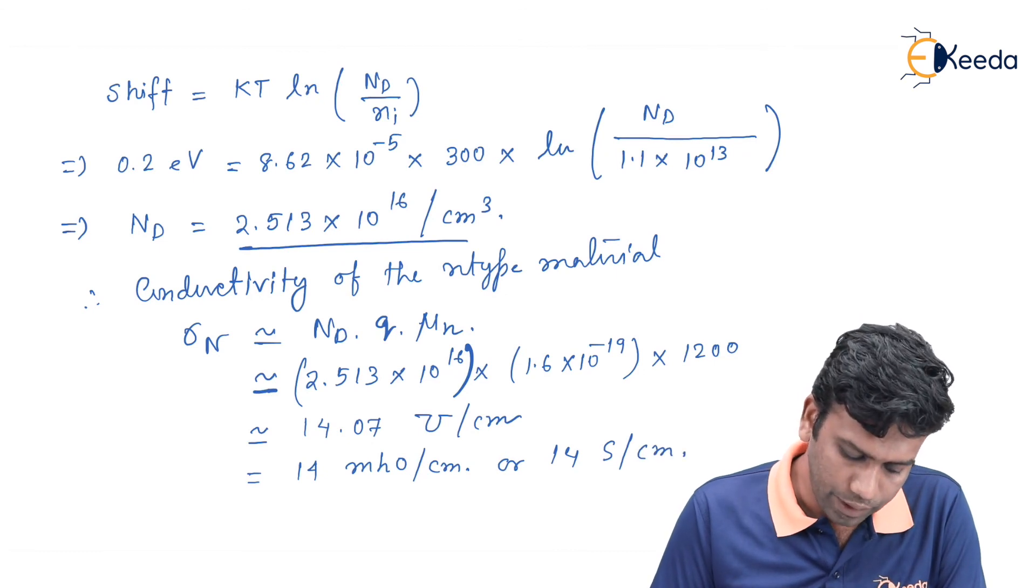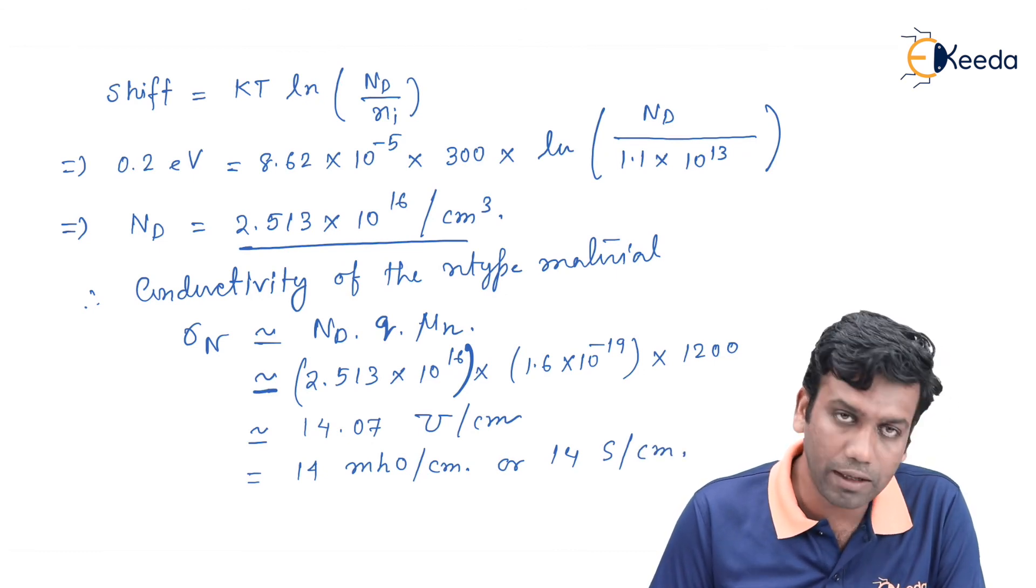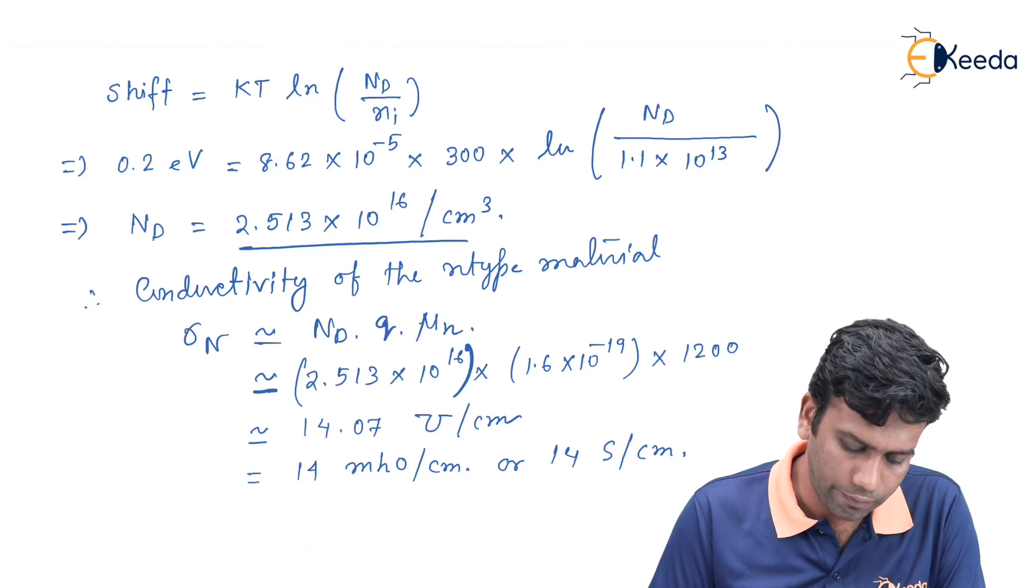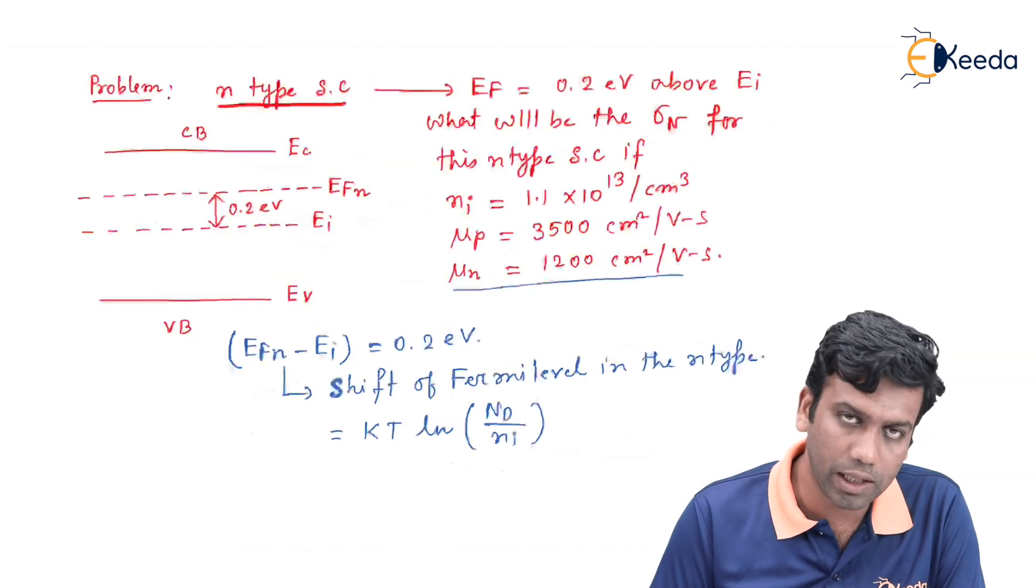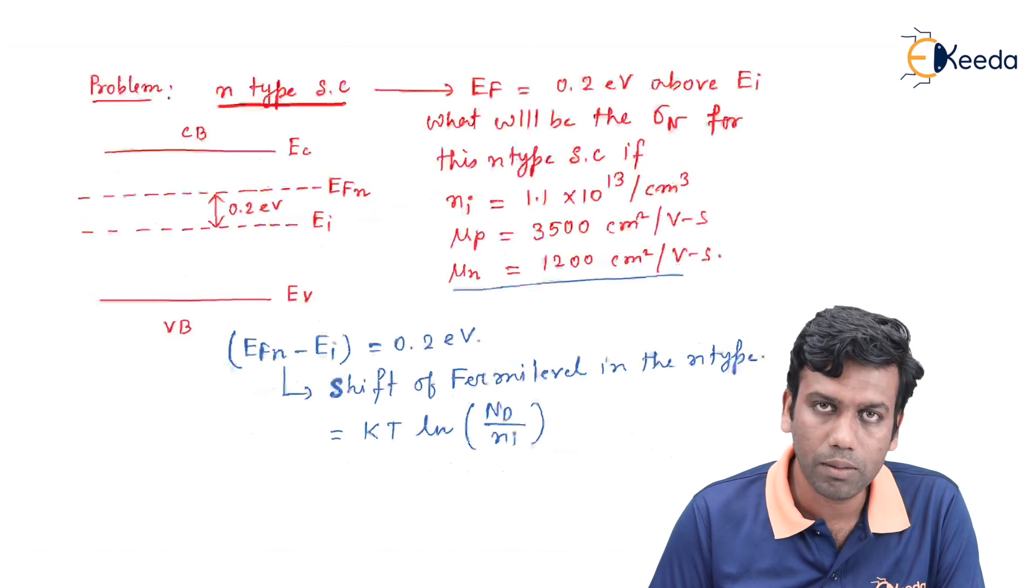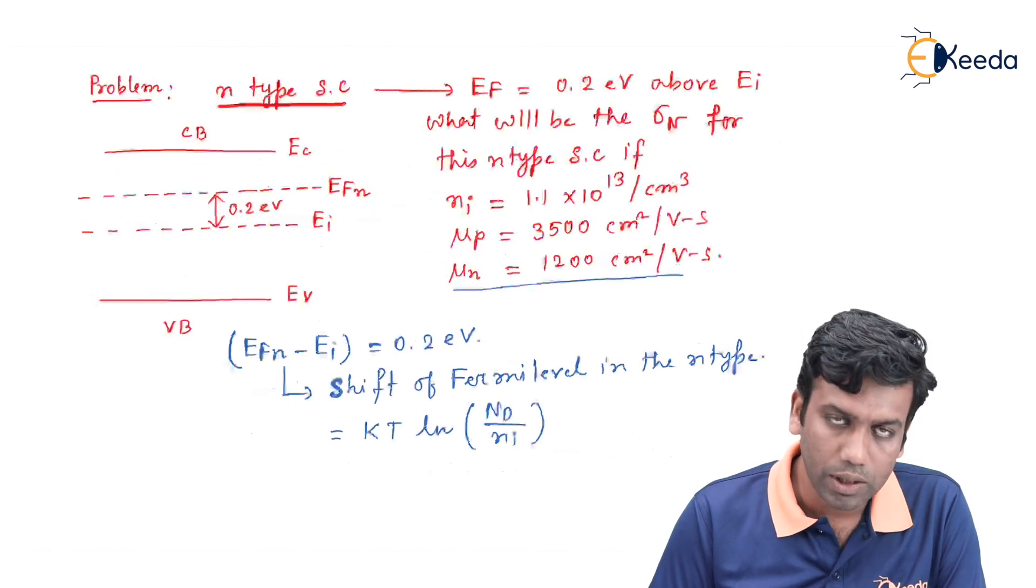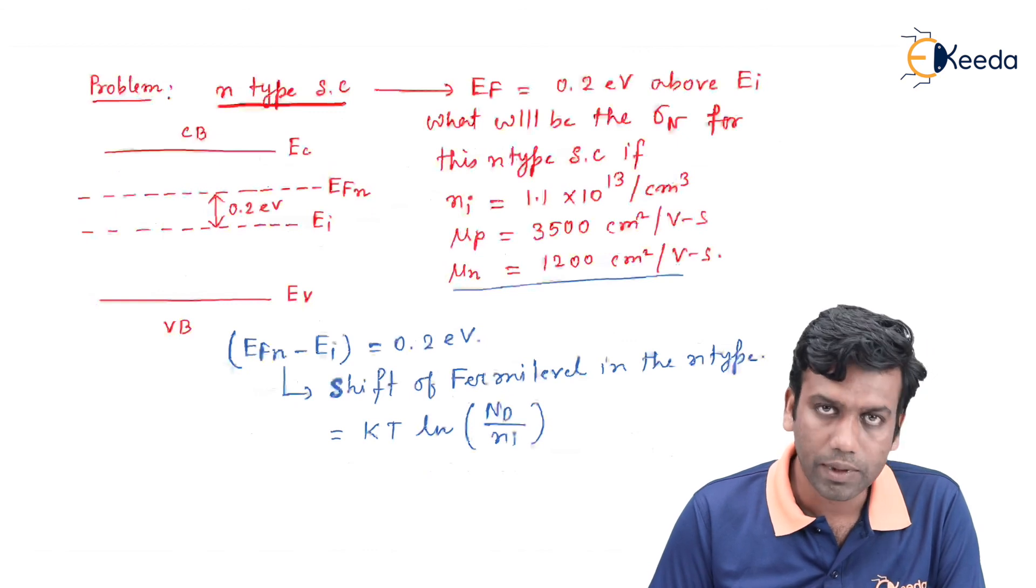In this way we can calculate the value of conductivity from an n-type material band diagram and the Fermi level position. This is all about this numerical or problem. Thank you.